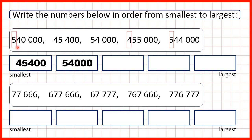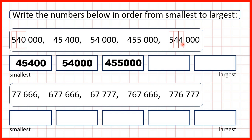So now if we look at the hundred thousands digit, here we have a five, a four, and a five. So this number with only four in the hundred thousands must be next smallest. Now both of our remaining numbers have five in the hundred thousands and four in the ten thousands. But if we look to the thousands, here we have a four, and here we have a zero. So 540,000 is our next number.